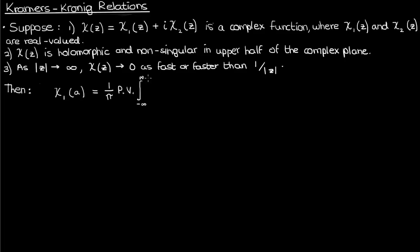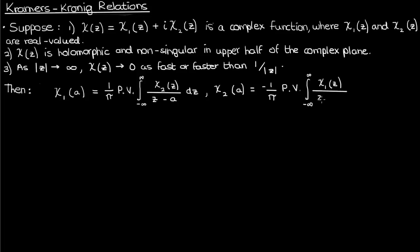If these assumptions are true, then the real part of chi can be evaluated using the imaginary part, and the imaginary part of chi can be evaluated using the real part, with these two equations, where a is a real number. These are called the Kramers-Kronig relations, and they're used quite a bit in electromagnetism, signal processing, wave propagation, really just many parts of physics where complex numbers regularly come up.